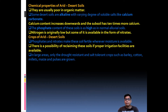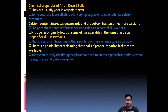The phosphate content of desert soils is very high, similar to alluvial soil. Nitrogen is originally low but available as nitrates. Phosphate and nitrates make the soil fertile whenever moisture is available. With proper irrigation — for example, the Indira Gandhi Canal has enabled widespread agriculture in the western region. Drought-resistant and salt-tolerant crops such as barley, cotton, millets, maize, and pulses are grown.